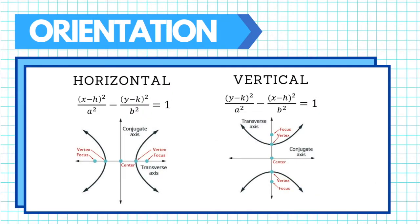For a hyperbola, we have two basic orientations: horizontal and vertical. In determining whether a hyperbola is horizontal or vertical, we refer to the standard form of equation. These are very similar equations, but there is a positive term and a negative term. If the positive term includes the x variable, the hyperbola is horizontal. If the positive term includes the y variable, then it is a vertical hyperbola, as seen in this figure.